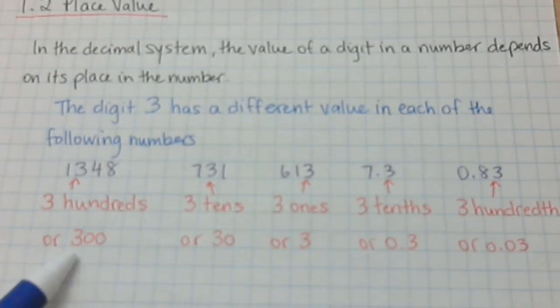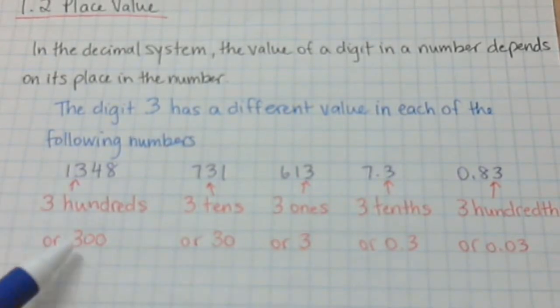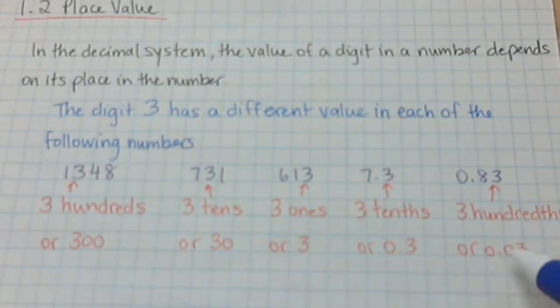What we do here is we express the total value of the number. Here it's three hundred, here it's thirty, here it's three, here it's 0.3, and here it's 0.03.